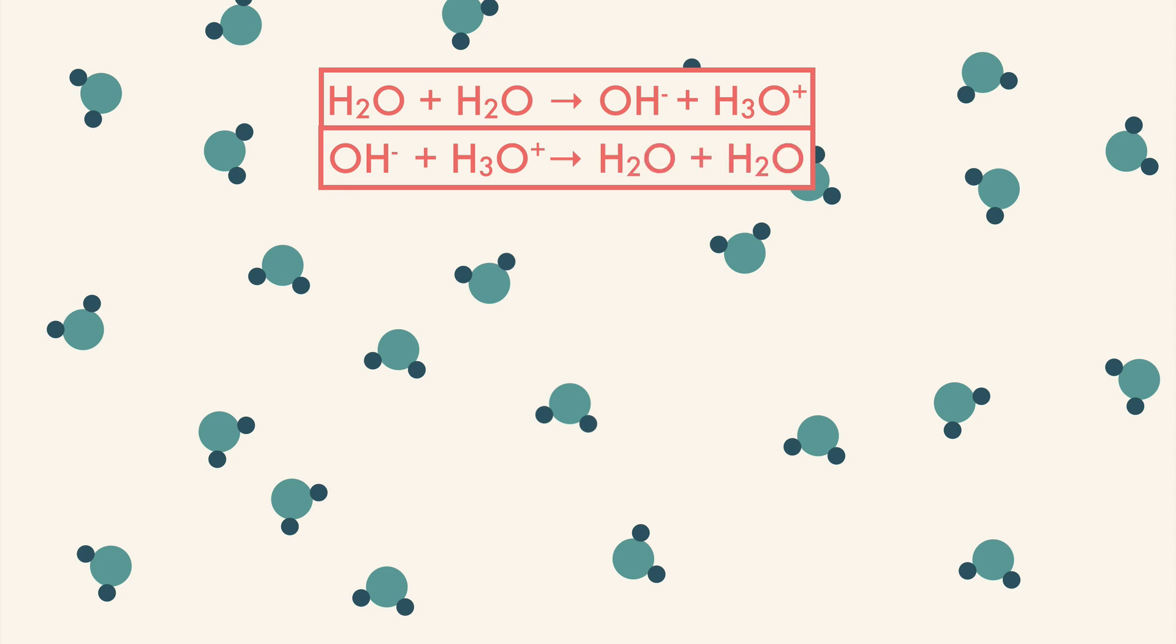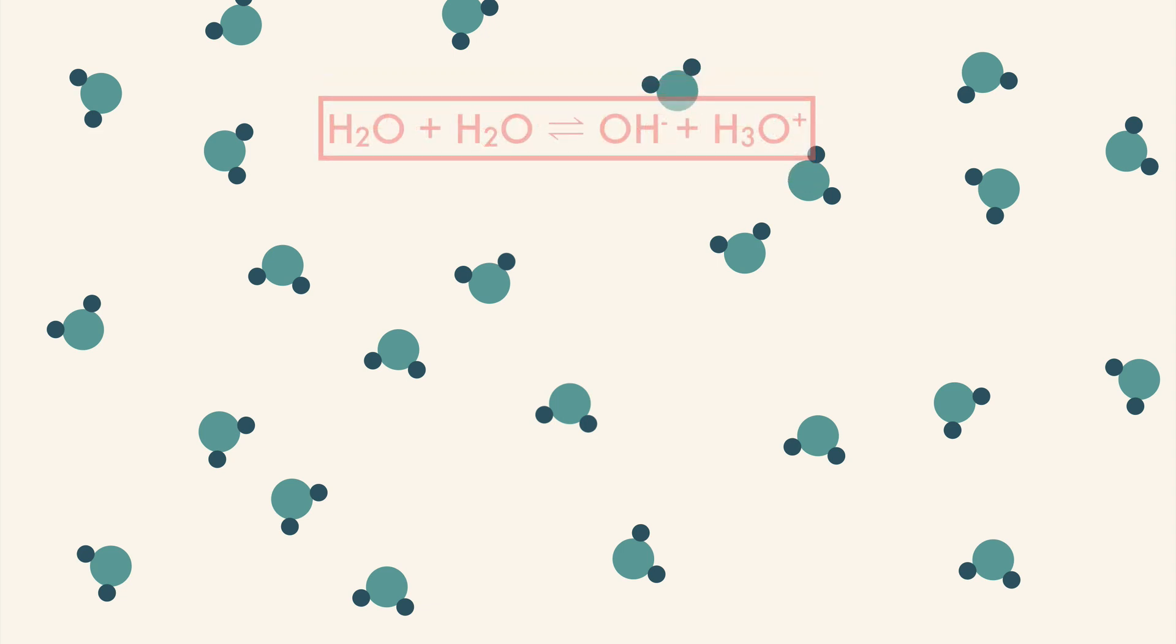Both of these reactions happen at the same time, all the time, in small percentages of the water molecules. So to simplify these two reactions, we write the equation with a double arrow to represent the reversibility. It's important to notice that not every molecule of water was turning into hydroxide and hydronium at the same time.